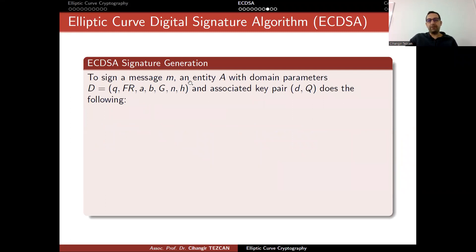To sign a message m, an entity A with domain parameters and associated key pair does the following. For signing each message, you have to still select a random integer k. And this should be kept secret. If you public the nonce, if you sign something and then say that I sign it with this random value, then your private key leaks. This is very important. Moreover, for different messages, you have to use different k's. If you use the same number k here to sign two different messages, your private key also leaks.